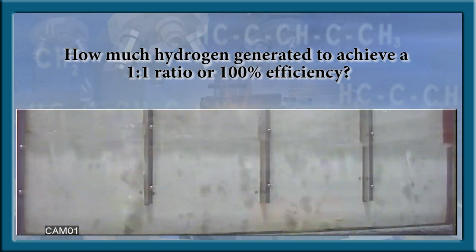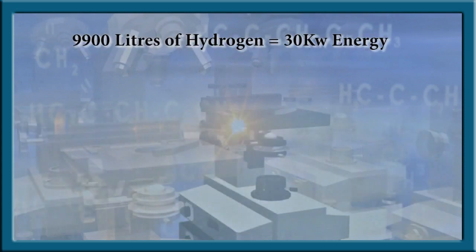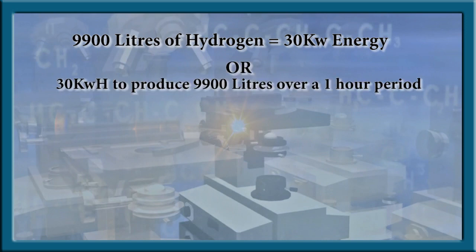Well, let's first do the equations. 9,900 liters of hydrogen gas delivers some 30 kilowatts of usable energy, rounded off for simplicity. With an energy efficiency of 1 to 1 or 100 percent, it would require 30 kilowatt-hours to produce 9,900 liters of hydrogen.